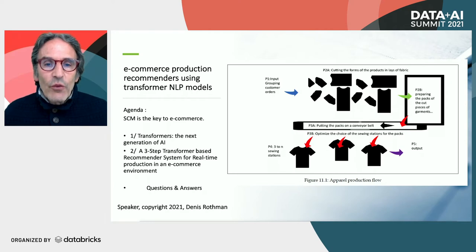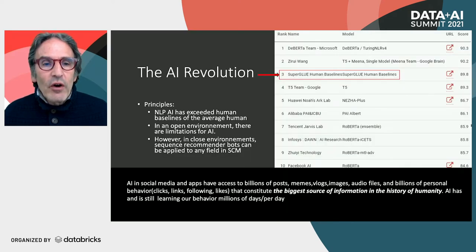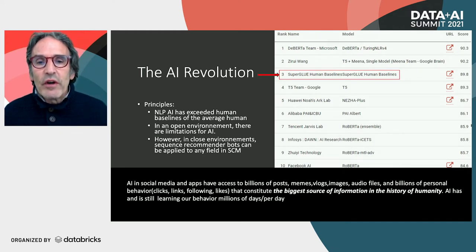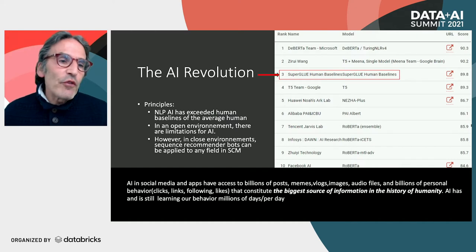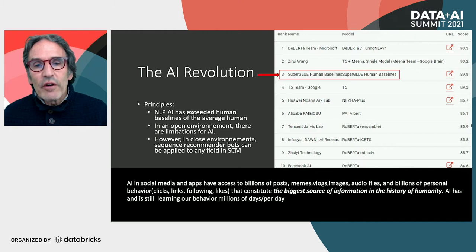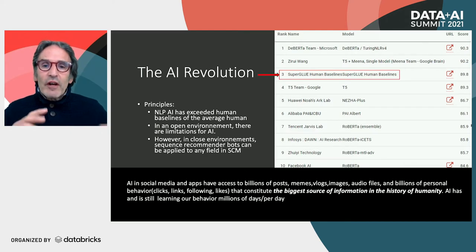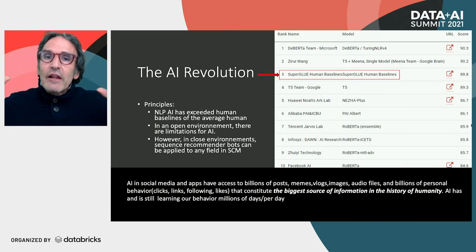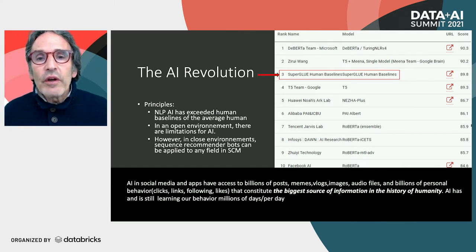Here is the SuperGLUE leaderboard — the reference for all natural language processing algorithms. You can see the human baseline here, which is a lot of tests done by above-average humans. And already we have two teams beating that human baseline.